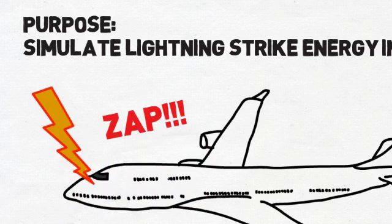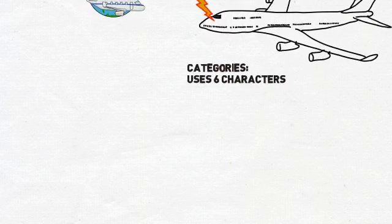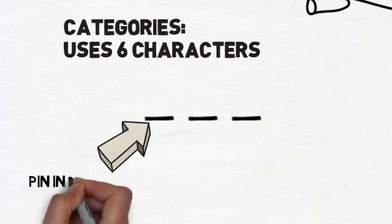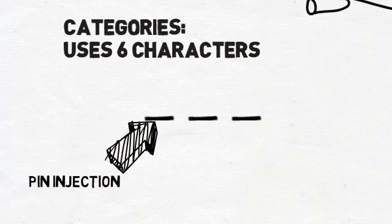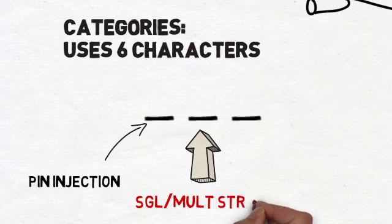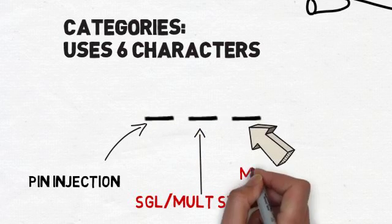Now the categories for section 22 consist of six characters. The first two call out the pin injection waveform set and test levels. The second set, or the third and fourth characters, refer to the single and multiple stroke waveform set and level. And finally, the last two characters determine the multiple burst waveform set and multiple burst level.